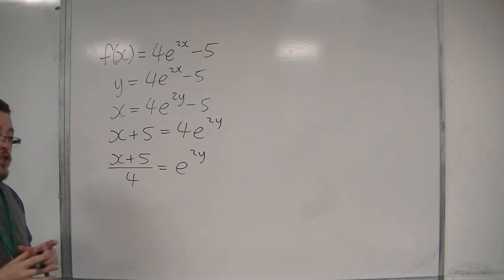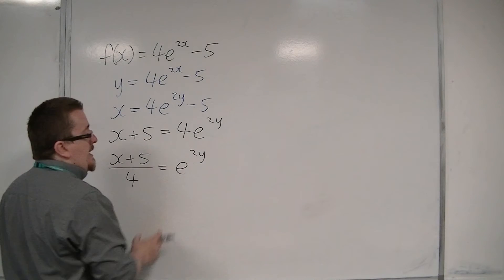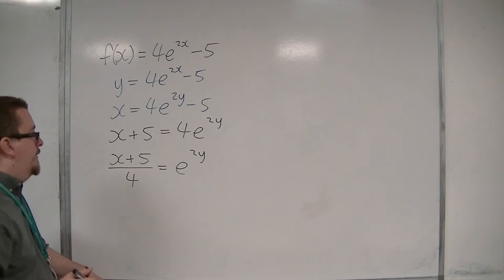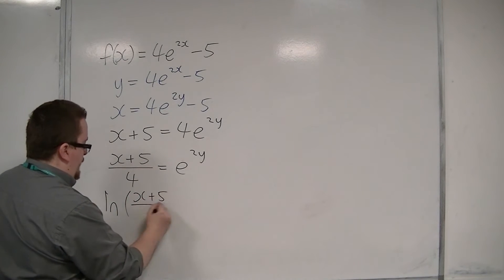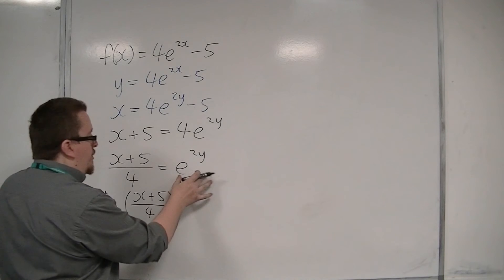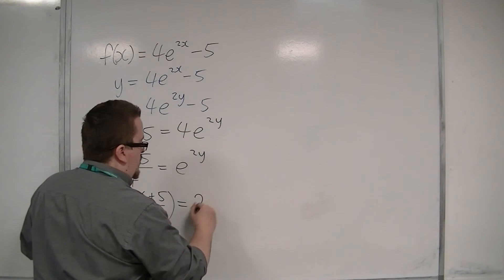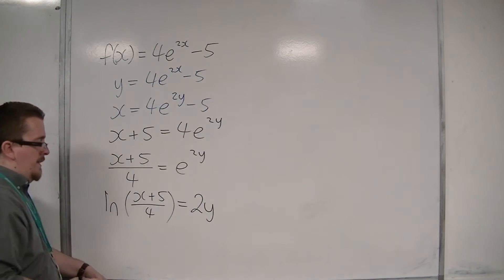At this stage, we can now get rid of the e by logging both sides. So we can log x plus 5 over 4. Log of e to the 2y is just 2y. And then you can divide both sides by 2.